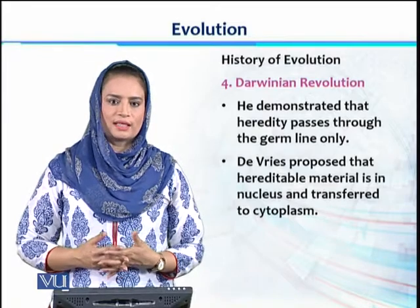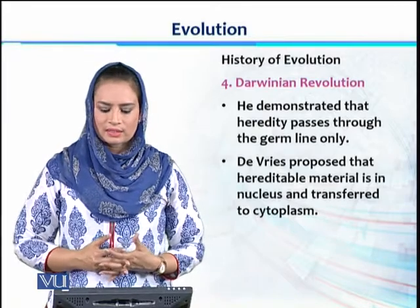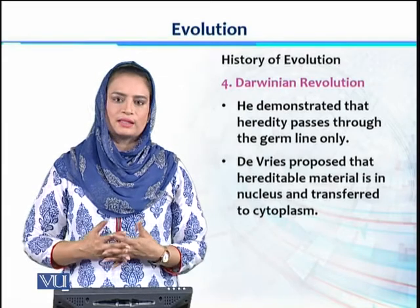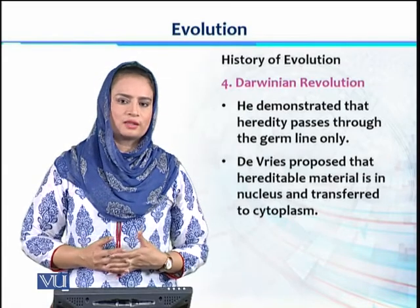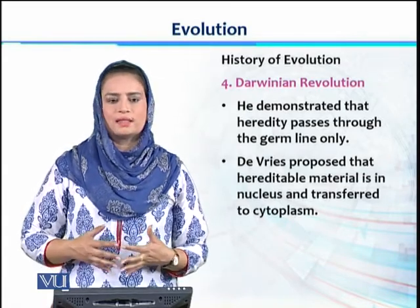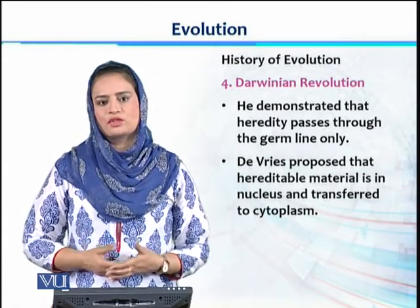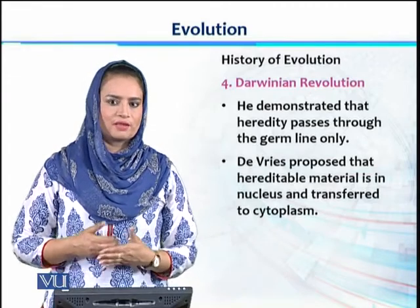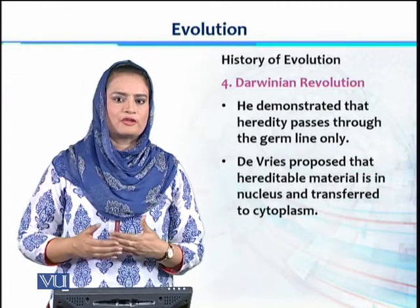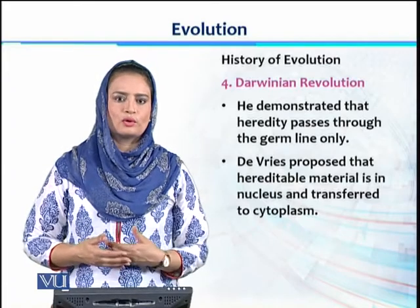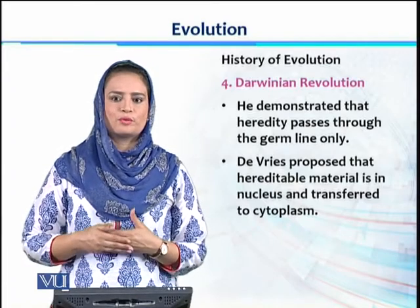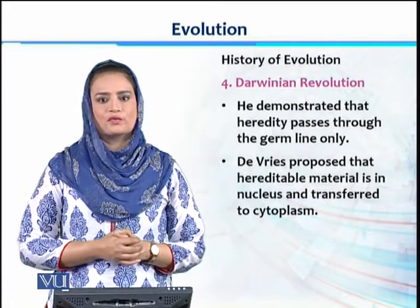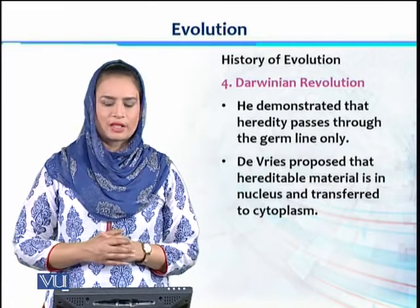De Vries was another scientist who proposed that heritable material is present in the nucleus and can be transferred to the cytoplasm. At that time DNA had not yet been identified, but De Vries proposed a theory which led towards the discovery of DNA in the future.